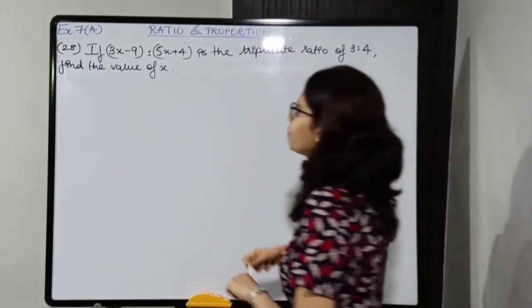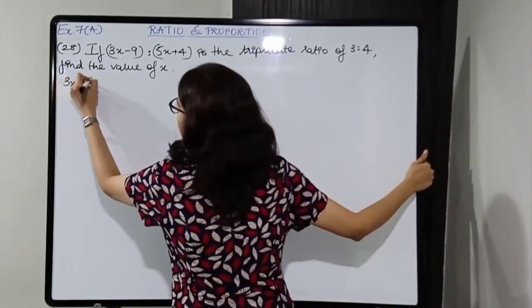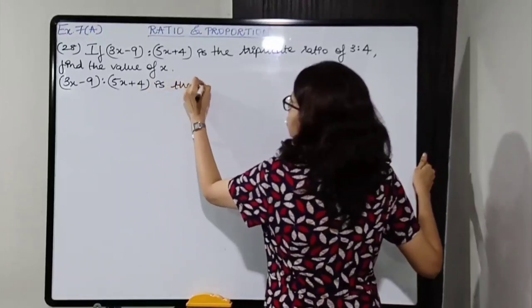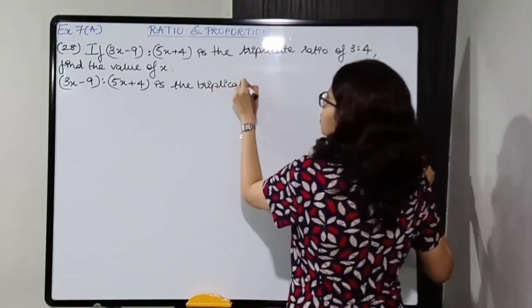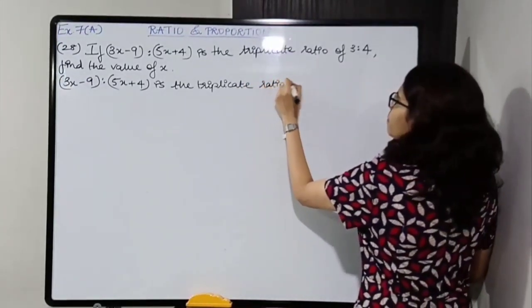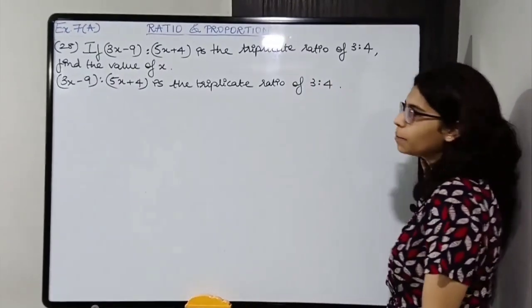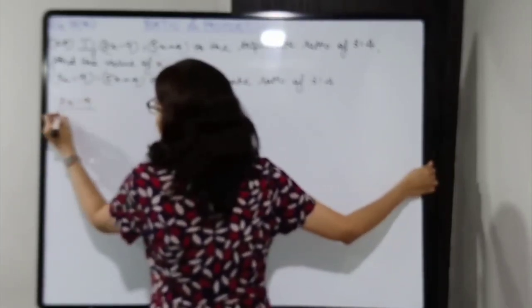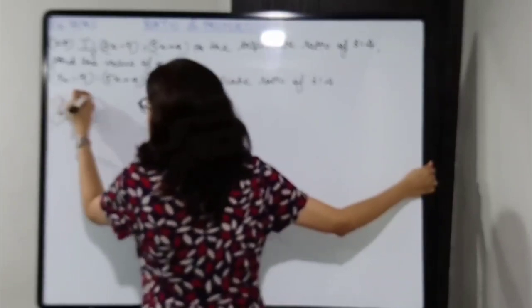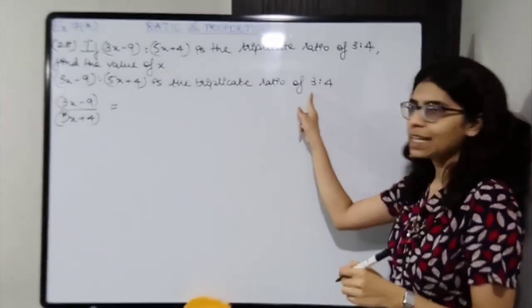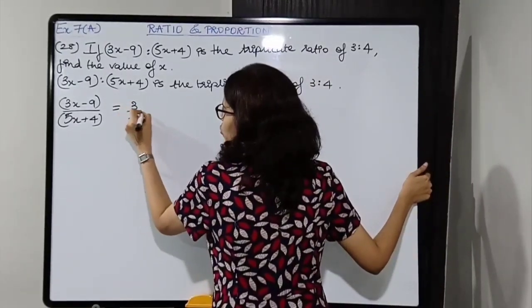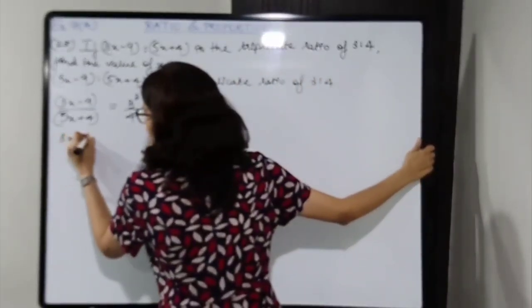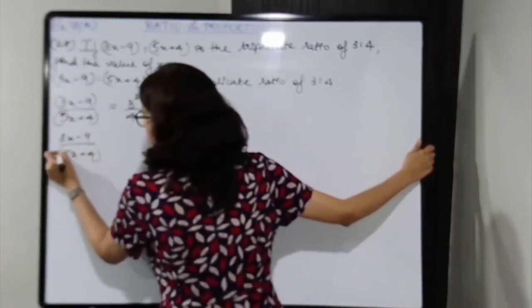Let's solve. Write down the statement: 3x minus 9 is to 5x plus 4 is the triplicate ratio of 3 is to 4. So this ratio, 3x minus 9 upon 5x plus 4 in brackets, is equal to the cube of this ratio — cubing both numerator and denominator.